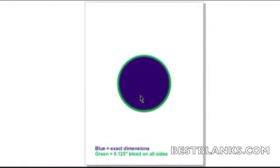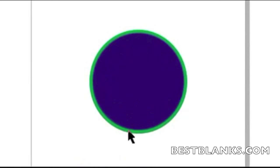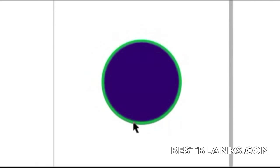Note that the blue area of the template defines the exact size of the substrate, whereas the green area defines the bleed area. You will need to make sure that the edges of your artwork match the outer edges of the green area. This will be covered a little bit later in the video.